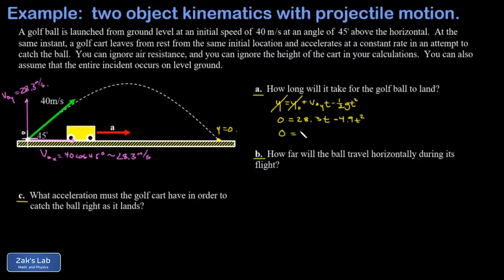I pull out a factor of t and I get two solutions to this. One is by setting that factor of t equal to zero, and the other one is found by taking the 28.3 minus 4.9t and setting that equal to zero.